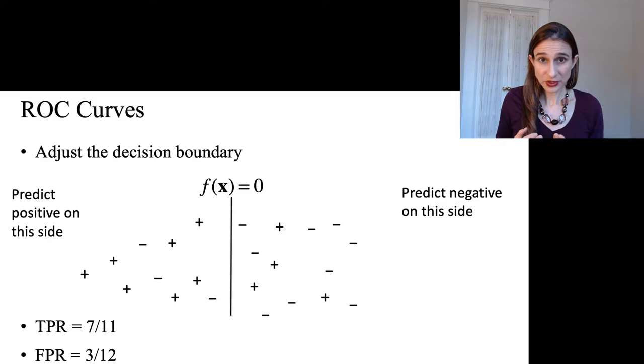Now, the false positive rate is 3 out of 12, because there are 12 negatives on the board, and 3 of them are predicted to be positive.